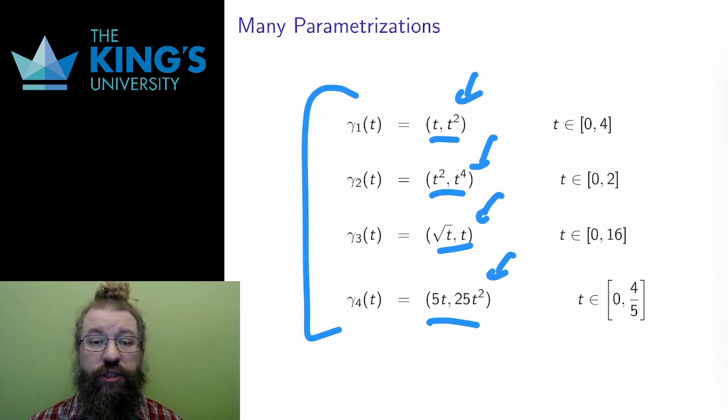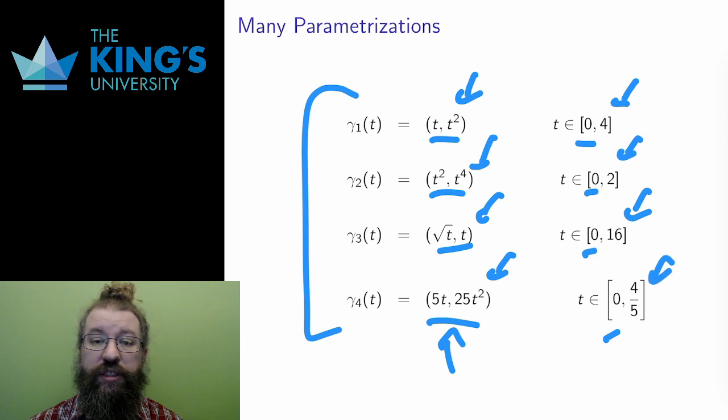And they all start at 0,0. If you test t equals 0 in each, you will get the point 0,0. And they all end also at 4,16. Feel free to test t equals the end of the interval for each and find the point 4,16.